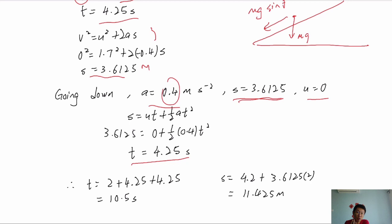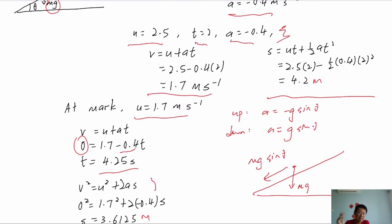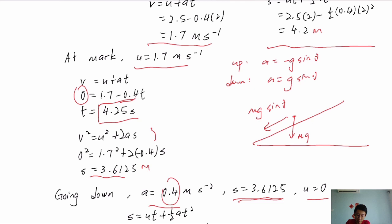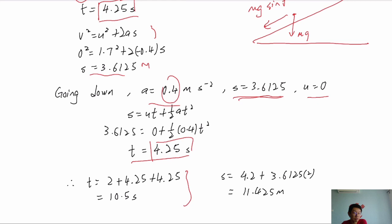Total time: count from the beginning. Time from start to mark = 2 s (given), time from mark up to highest point = 4.25 s, time from highest point back to mark = 4.25 s. Adding these together gives a total of 10.5 seconds.